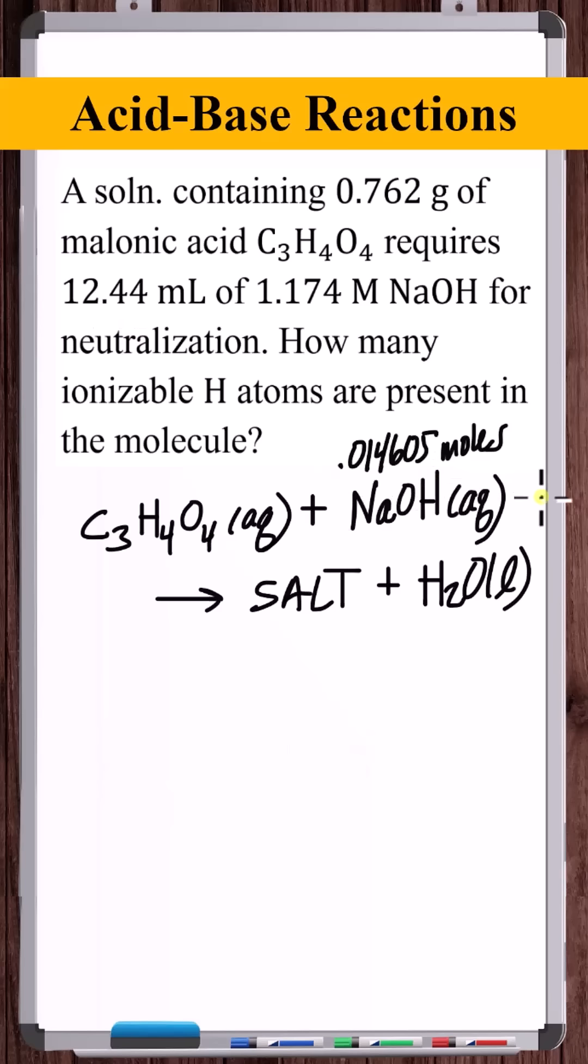Now for the neutralization to take place, how many moles of malonic acid did these moles of sodium hydroxide react with? It was 0.762 grams of malonic acid. To convert this to moles, we need the molar mass of malonic acid.